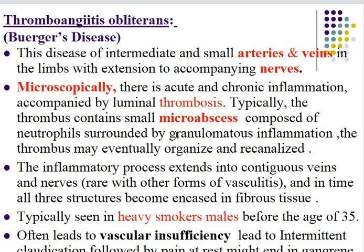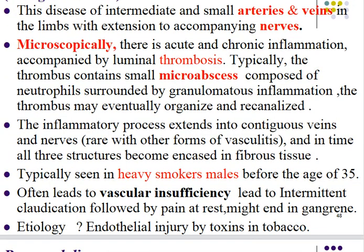The inflammatory process extends to the contiguous vein and nerve, which is rare with other forms of vasculitis. All three structures — artery, vein, and nerve — eventually become encased in fibrous tissue. The condition is typically seen in heavy smoker males before age 35, often leading to vascular insufficiency, intermittent claudication of the lower limb, pain at the wrist, and may end in gangrene. The etiology is endothelial injury by toxins in tobacco.